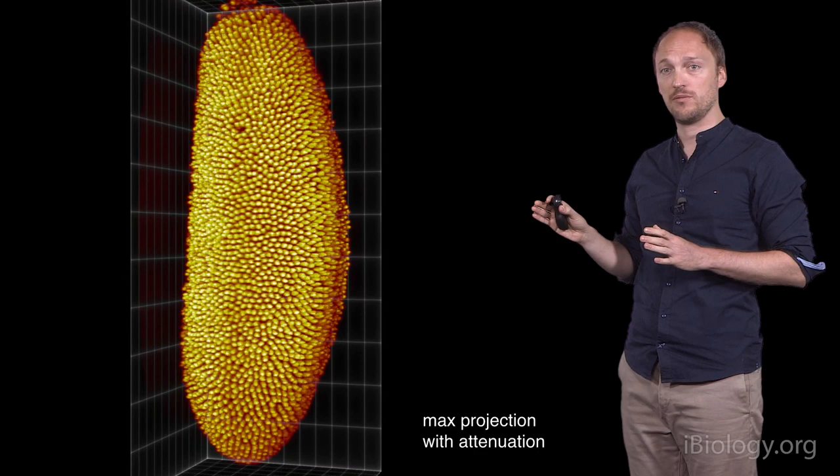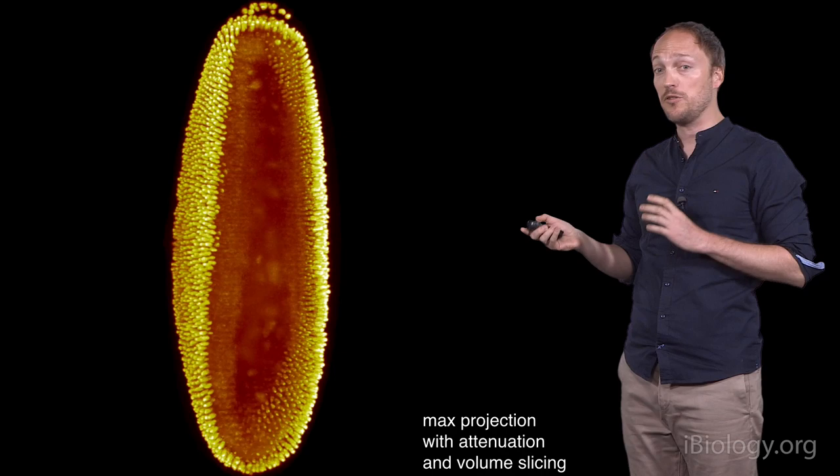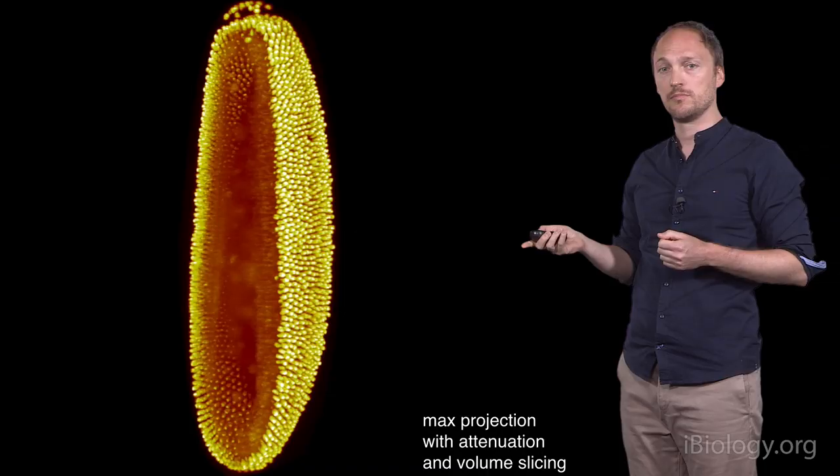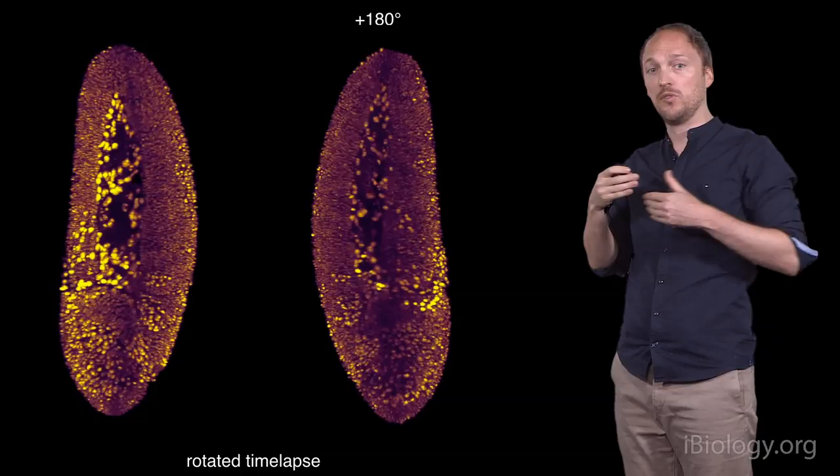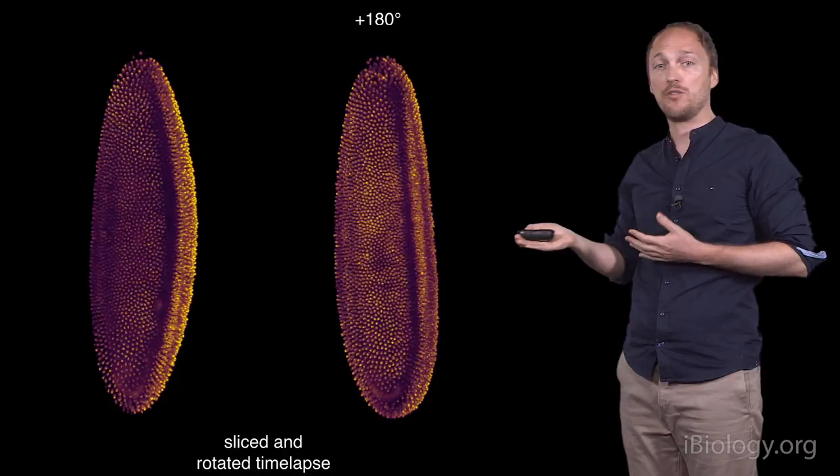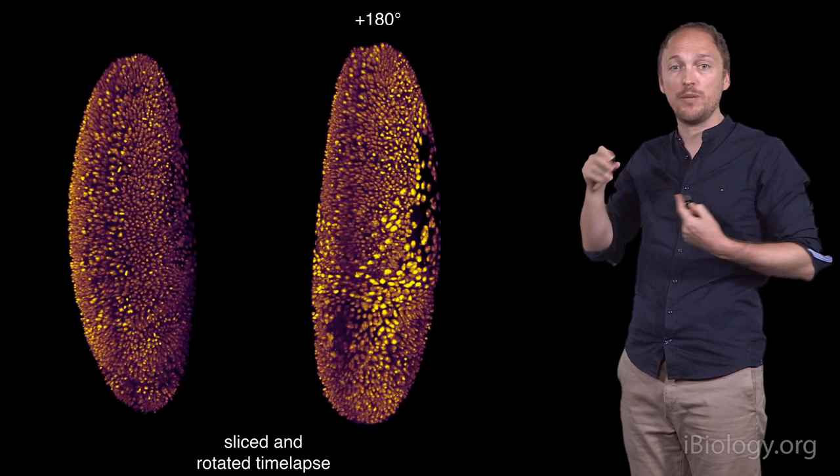Here is the result of rendering with max projection and attenuation. Structures on the surface are easier to discern. We can also slice the 3D image to see the interior. Time-lapses can also be visualized and combined with rotation. Here you can see two views that are 180 degrees relative to each other, with time-lapse playback. We can also combine all of these aspects together, rotating and slicing the dataset, while playing back the time-lapse.